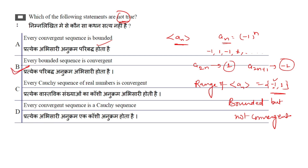Also important results to remember: every Cauchy sequence of real numbers is convergent, every convergent sequence is a Cauchy sequence, and every convergent sequence is bounded. These are all true. So the correct answer is option B.